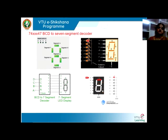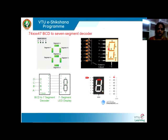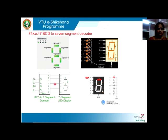Manufacturers decide whether the display should be common anode or common cathode and configure it accordingly. For example, LT542 has its own configuration, while another variant has a different configuration. When procuring a 7-segment display, you need to check which type it is and whether it meets your requirement, or design your circuit to be compatible with the display you already have.